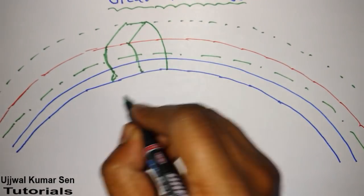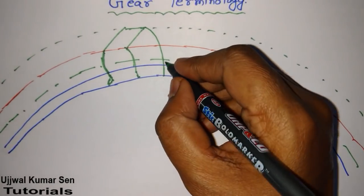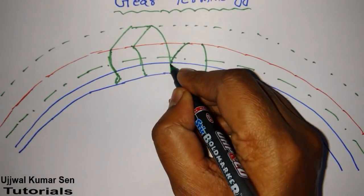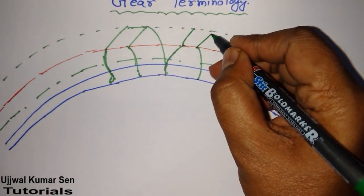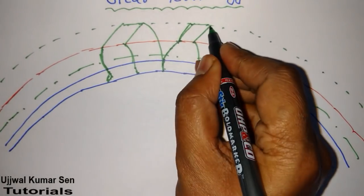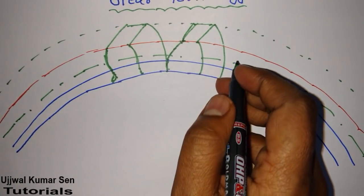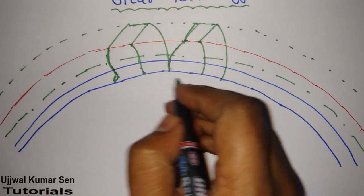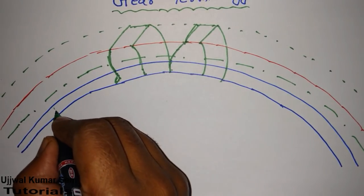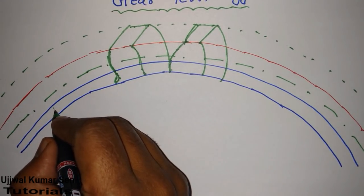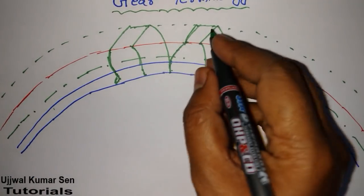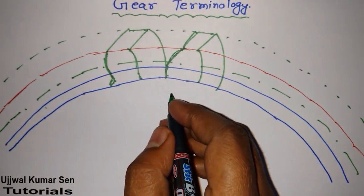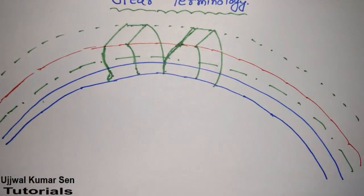Draw again like this and again like this. Now we will go for the top land. Here is the top land. Now you need to specify names. In this diagram I have taken a little more clearance than needed — this gap is known as clearance. You should not take this much clearance, but even then, this is looking like a gear. So that's the gear terminology diagram we are drawing here.